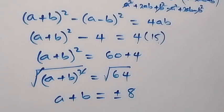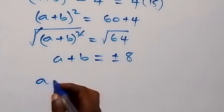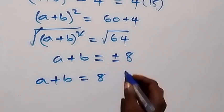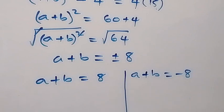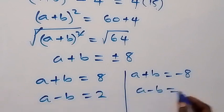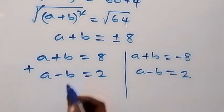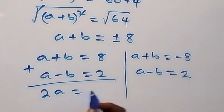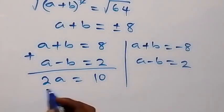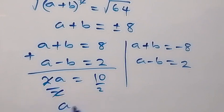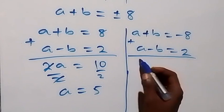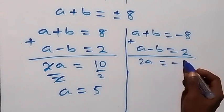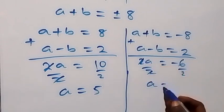Which implies two cases. First case: A plus B equals 8. Second case: A plus B equals minus 8. Adding each with A minus B equals 2 to eliminate B: first case gives 2A equals 10, so A equals 5. Second case gives 2A equals minus 6, so A equals minus 3.